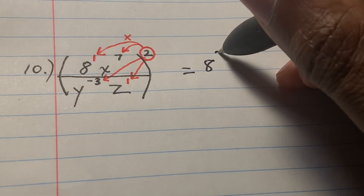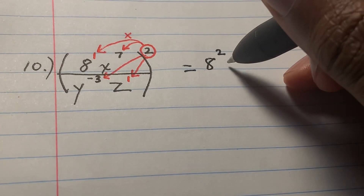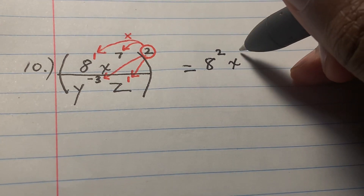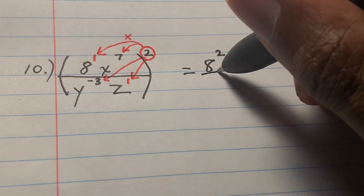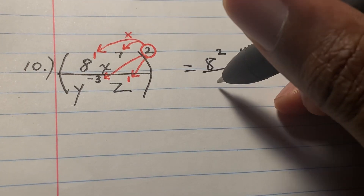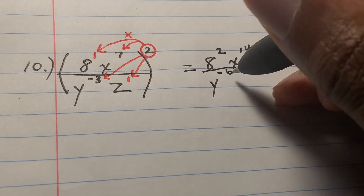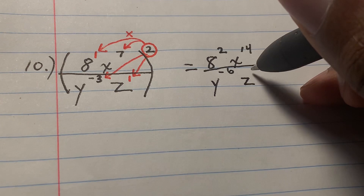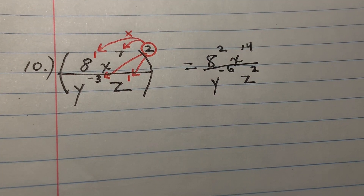Two times one gives eight to the second power, also known as eight squared. Then we have x to the fourteenth. Draw the fraction bar. On the bottom: y to the negative sixth, and z to the second power.